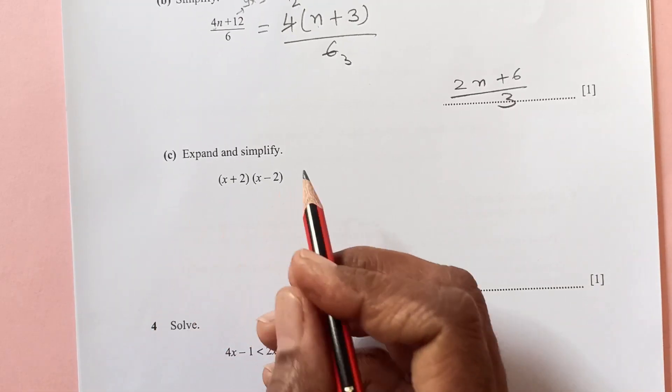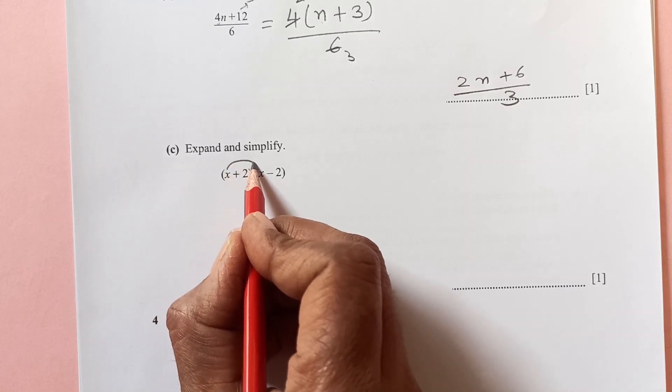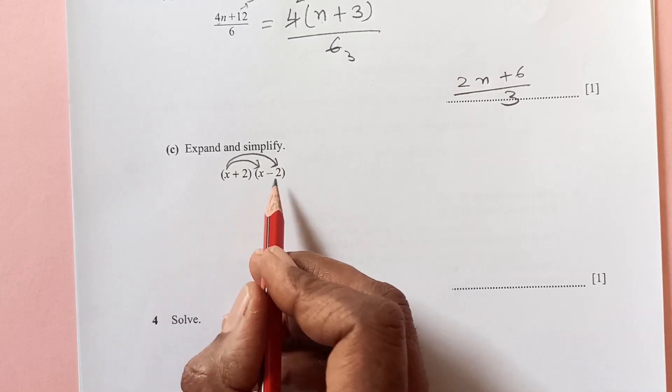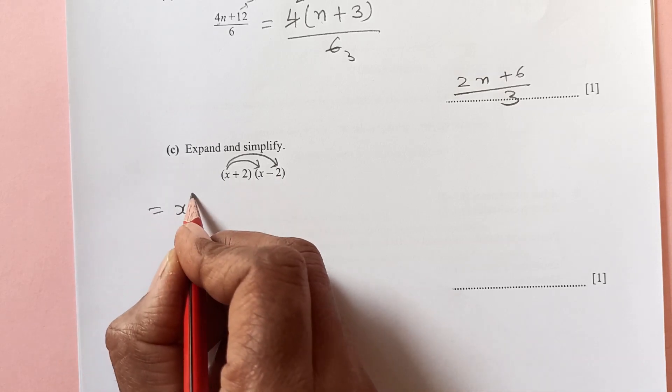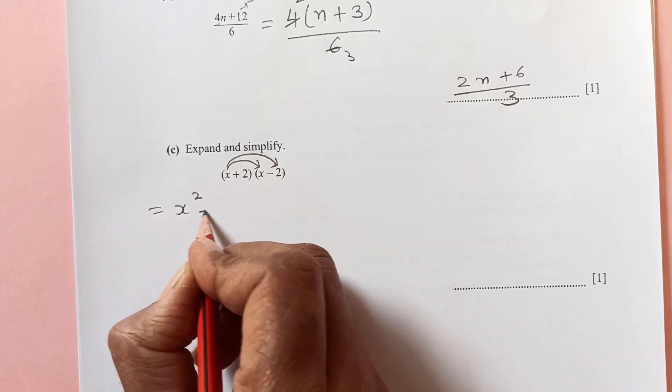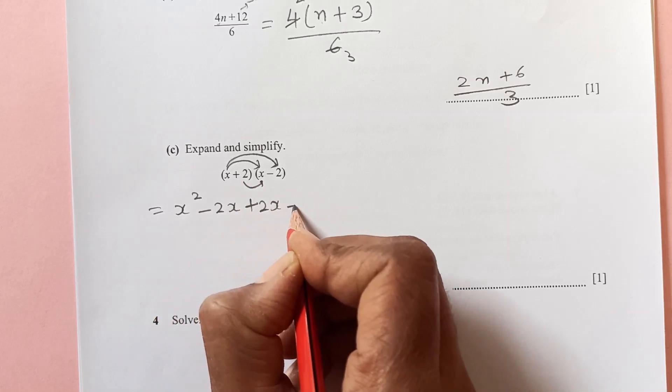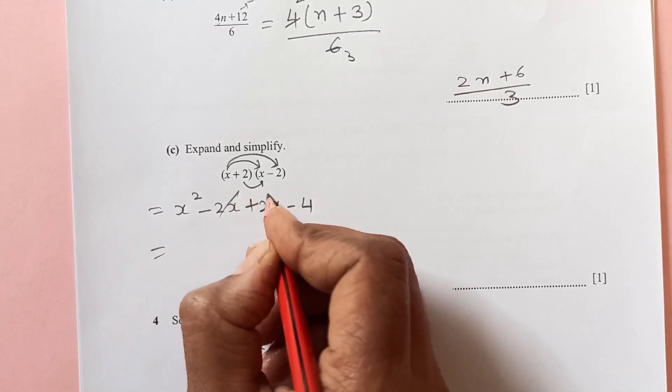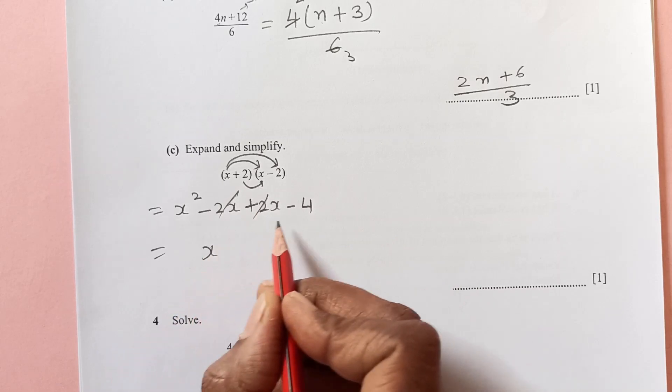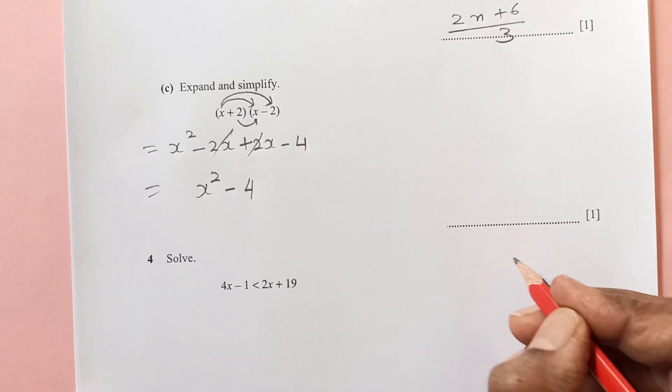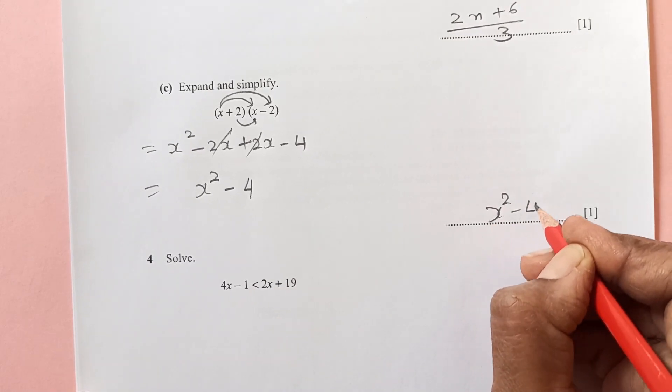Now expand. Expanding the brackets, we will multiply x to both of these terms here. That is going to be x times x is x squared, then x times this is minus 2x, then plus 2x minus 4. This is gone because this is negative, this is positive. So x squared minus 4 is final answer.